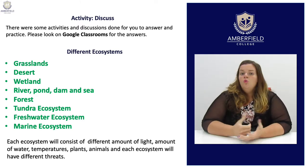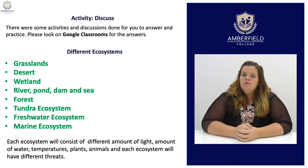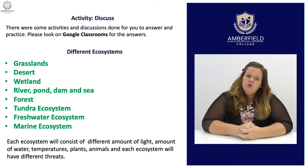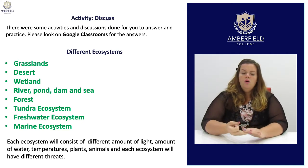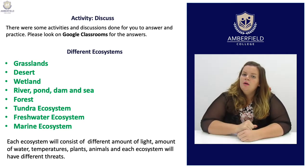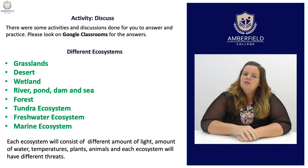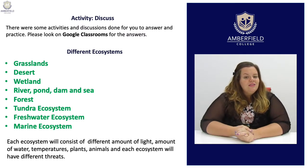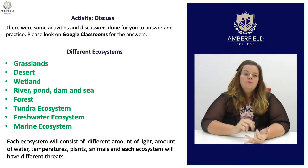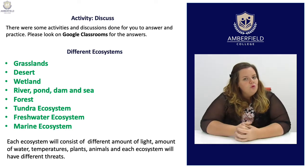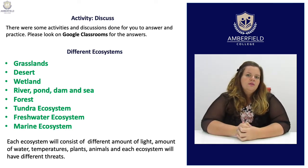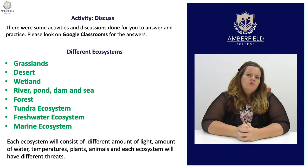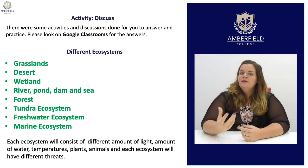Different types of ecosystems we have in the world around us would be grasslands and wetlands. Remember, a wetland could be a river, dam, or a pond — but remember, the sea would also be considered a wetland. Forests are another example of an ecosystem. You also get a tundra ecosystem, a freshwater ecosystem, and of course a marine ecosystem. We could sum up a sea ecosystem as a coral reef system.